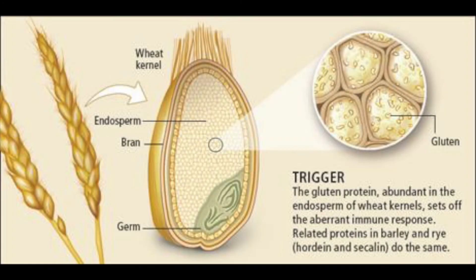Celiac disease is a very unique model of autoimmune disease because we know a lot more about it than we do other autoimmune diseases like type 1 diabetes or multiple sclerosis. In celiac disease, we know the trigger: the ingestion of gluten turns on the autoimmune process, and when we take gluten out of the diet, the autoimmune process turns off. We don't know that for things like inflammatory bowel disease or type 1 diabetes.